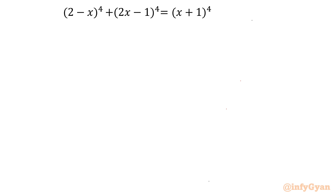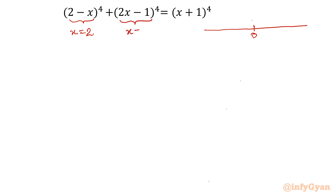Let's get started by drawing a number line. Now you must be thinking, why a number line? See, whatever is written inside the bracket gives me points on the number line by putting each bracket equal to zero. This gives x equal to 2. Similarly, from 2x minus 1 equal to 0, we get x equal to half. From the third bracket, I get x equal to negative 1.